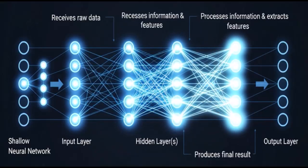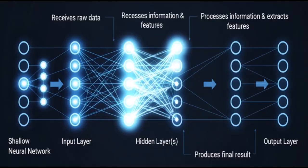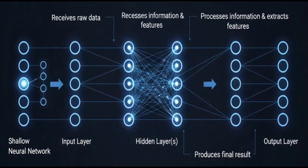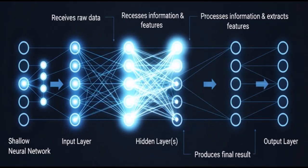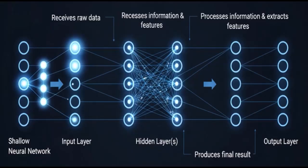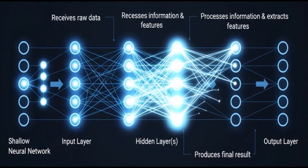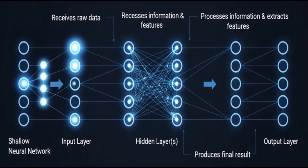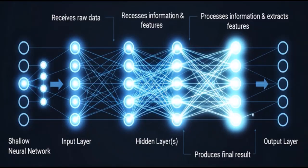Next, the data flows through one or more hidden layers — the computational powerhouses of the network. Each neuron in a hidden layer receives input from the previous layer, performs calculations, and then passes its output to the next layer. These hidden layers are where the network learns to identify complex patterns, features, and relationships within the data.